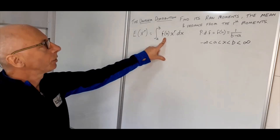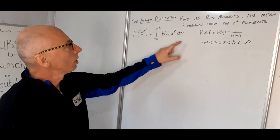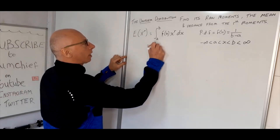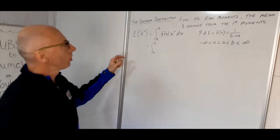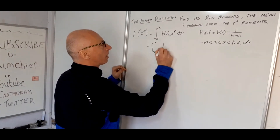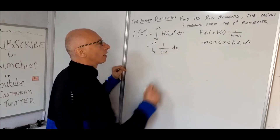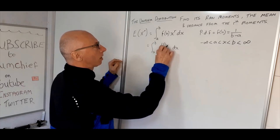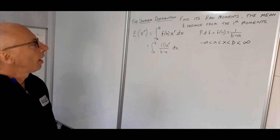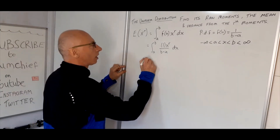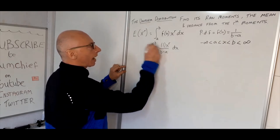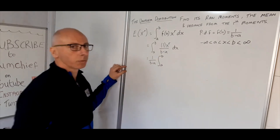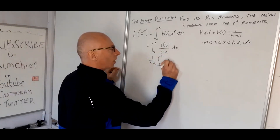To find the raw moment for our uniform distribution, we simply plug in 1/(b − a) and integrate from a to b. Our f(x) is 1/(b − a) and we multiply by x to the r. This is straightforward to integrate — we can bring the 1/(b − a) out front since it has no dependence on x, and then apply the simple power rule to x^r.